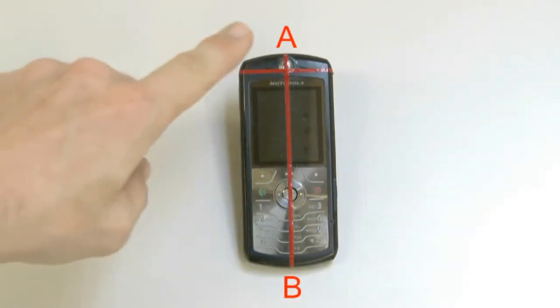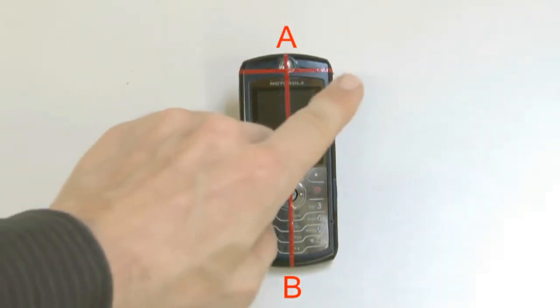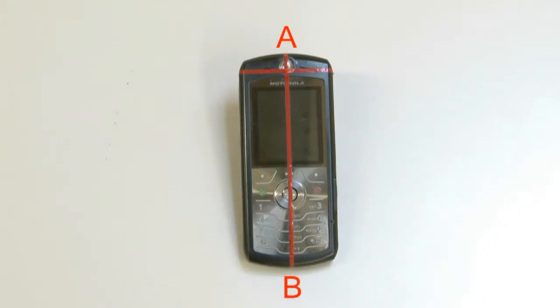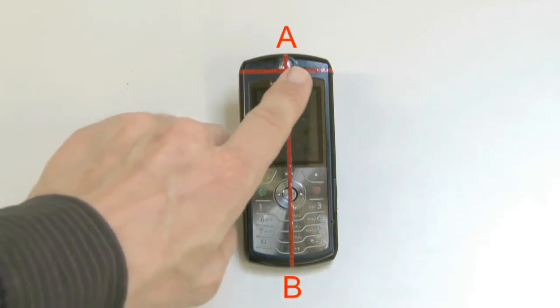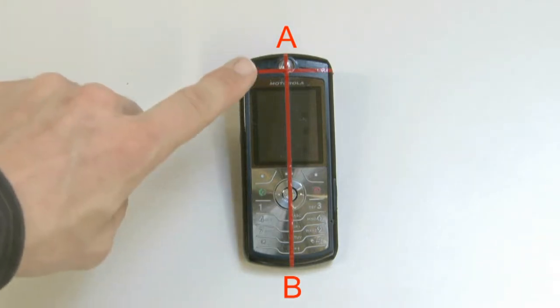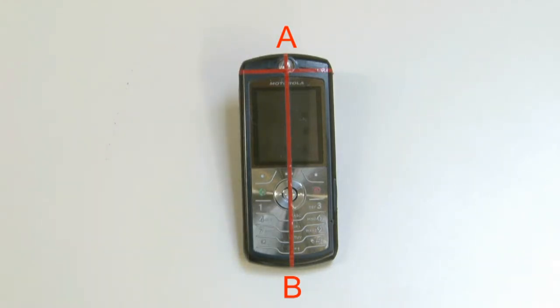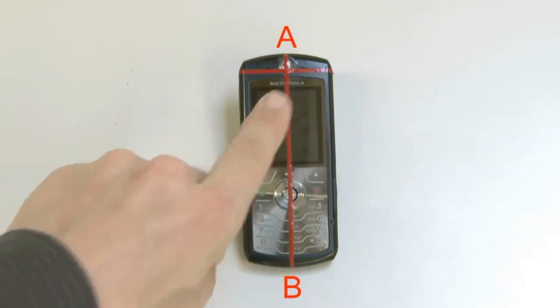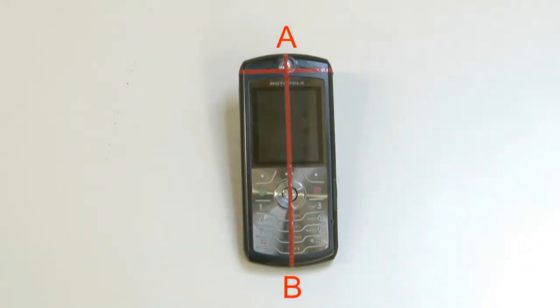Define two imaginary lines on the front side of the device. The vertical line passes through the midpoint of the width of the device at the level of acoustic output, which is shown as point A, to the midpoint of the width of the bottom of the device, which is shown as point B. The horizontal line is perpendicular to the vertical line and intersects with the vertical line at point A.